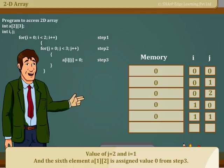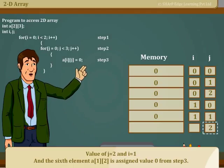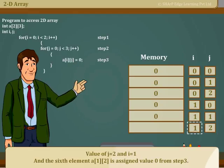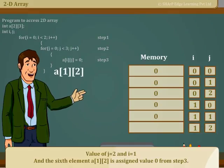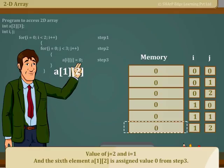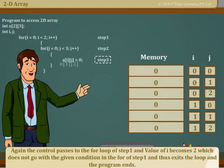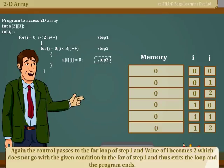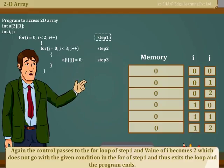Again, the control passes to the for loop in step 3 and value of j equals 1, and the sixth element A[1][2] is assigned value 0 from step 3. Again, the control passes to the for loop in step 1 and value of i becomes 2, which does not go with the given condition in the for loop of step 1, and thus exits the loop and the program ends.